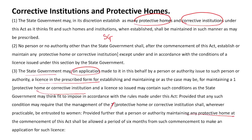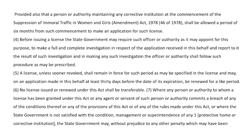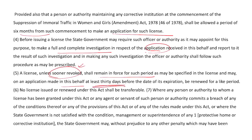Any authority maintaining a protective home at the commencement of this Act shall be allowed a period of six months from such commencement to make application for a license. Similarly, a person or authority maintaining any corrective institution shall also apply for a license within six months. Before issuing the license, the state government shall fully investigate whether the information in the application is correct and all procedures are duly followed. The license shall remain in force unless revoked or cancelled, and may be renewed on an application made at least 30 days before the date of its expiration.